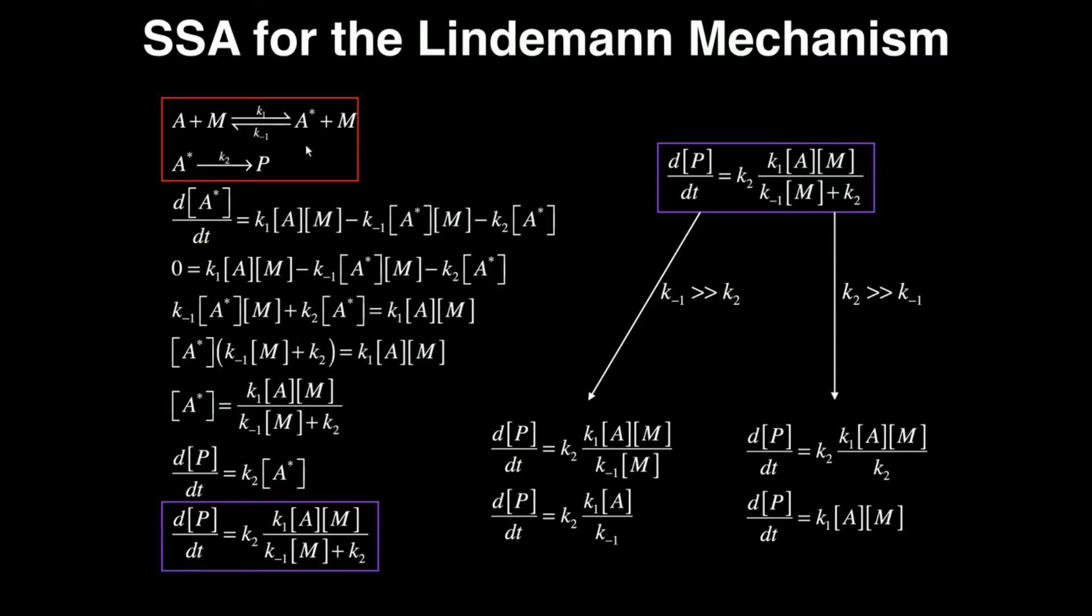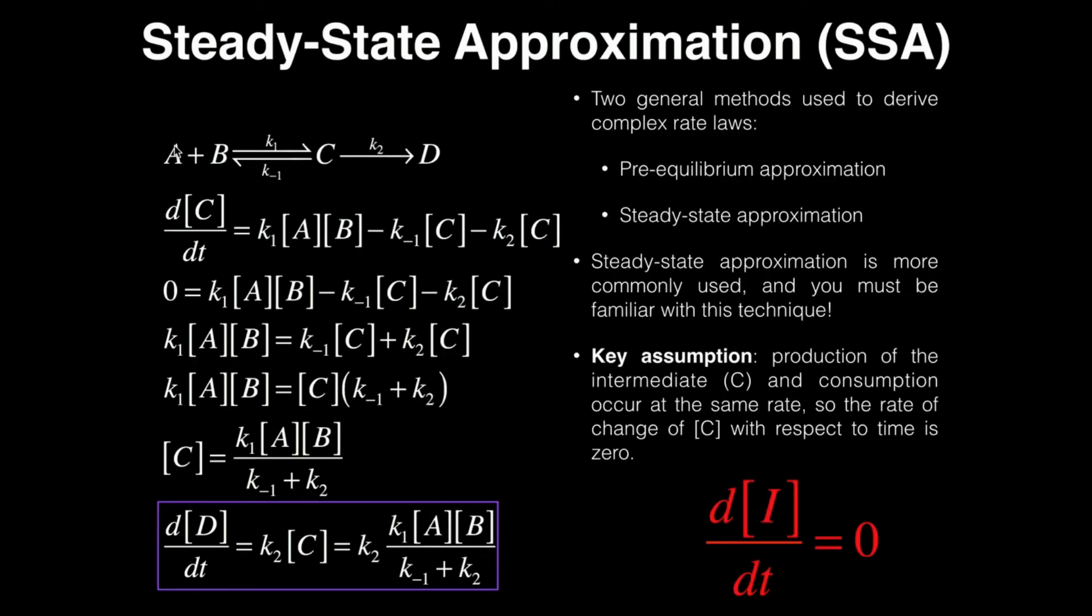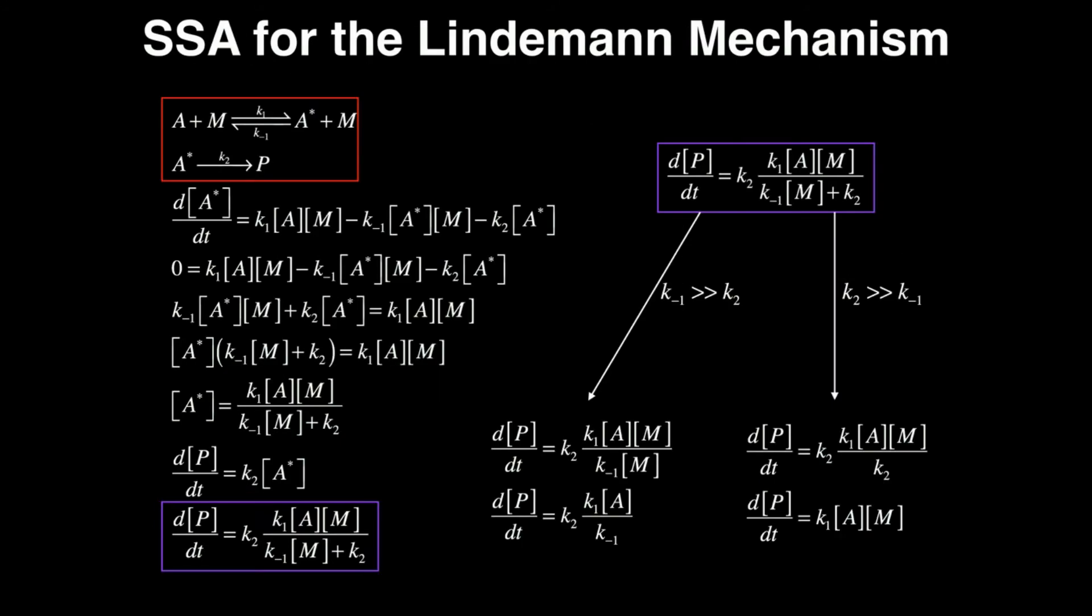So it's really nothing different though than the reaction we saw in this right here. This A plus B, this C might as well be our A star. You're going to find this really isn't that much different. Now let's use steady state approximation to actually determine what the rate law is for this reaction. What is the rate of the formation of the product with respect to time?